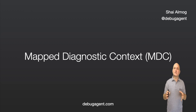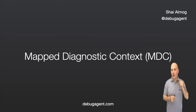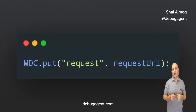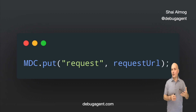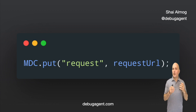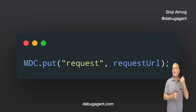MDC lets us add metadata to the logs. For instance, I can just put the current request URL or the current user into the MDC. From now on, every log printout will include the request URL.